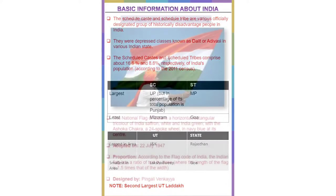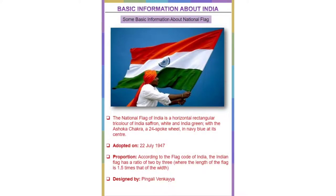Some basic information about the national flag: The national flag of India is a horizontal rectangular tricolor with colors saffron, white, and India green, with the Ashoka Chakra — a 24-spoke wheel in navy blue — at its center. It was adopted on 22nd July 1947. The flag has a ratio of 2 by 3, where the length is 1.5 times the width. It was designed by Pingali Venkaiah.